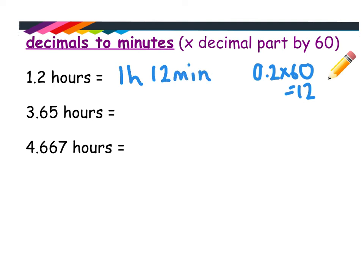The second one, 3.65. Well, I know that's 3 hours something. You go to the side and you do 0.65 times 60. And that will give you 39 minutes. So that would be 3 hours and 39.